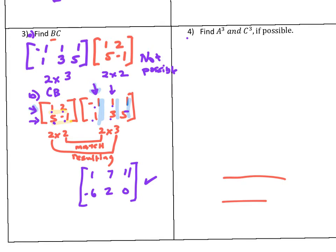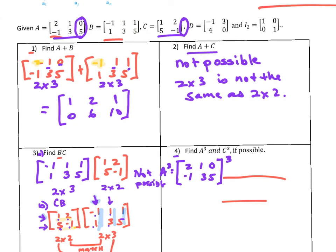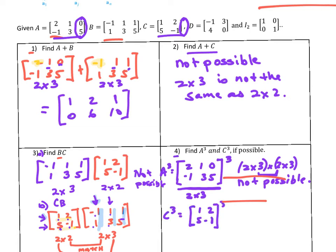Number 4: what if we want to find A³ and C³? This means take A, multiply by A, and multiply by A again. Let's look at the dimension. A is a 2×3 matrix. If I take 2×3 and multiply by another 2×3, can I do this? No, we don't have a match. This is not possible.